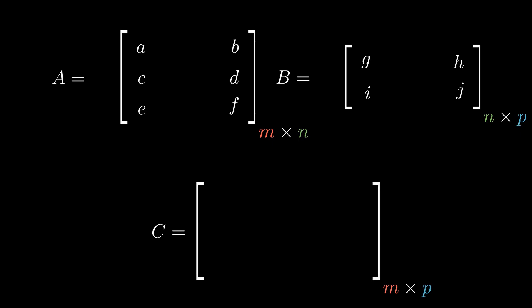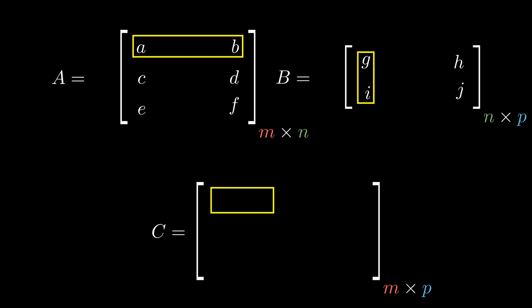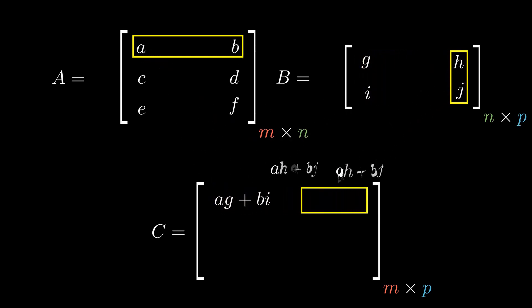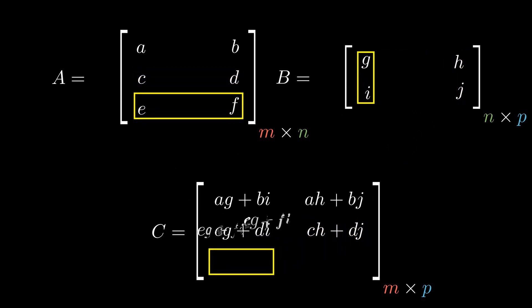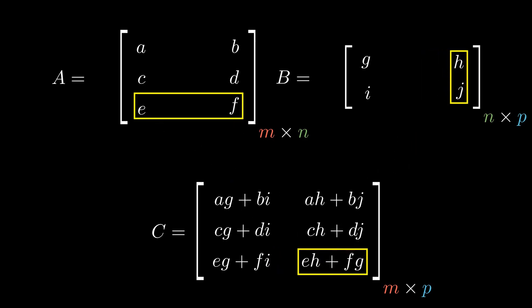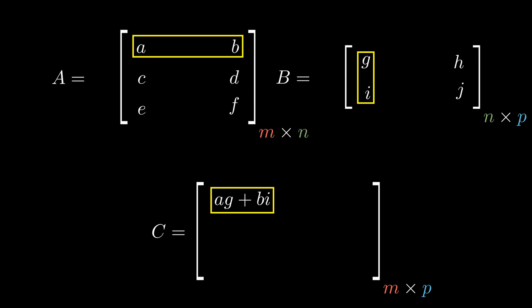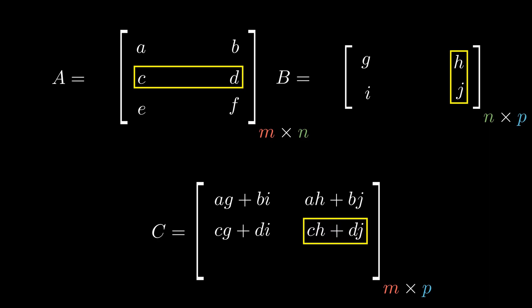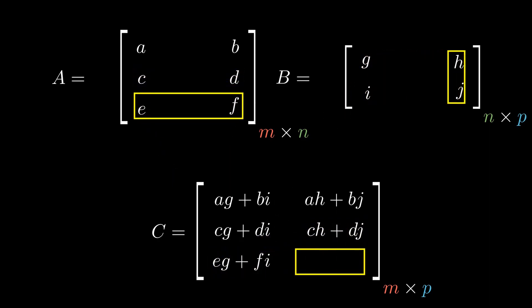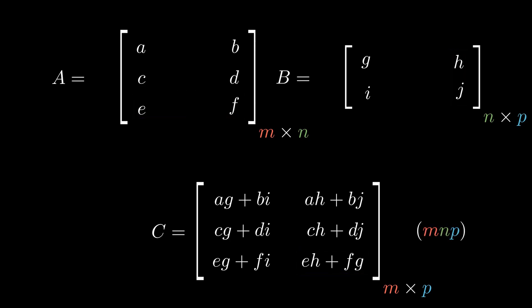The resultant matrix has m×p elements, so the number of multiplications is at least m×p. Each element of the resultant matrix is calculated by taking the corresponding row from the first matrix and the corresponding column from the second matrix — each of dimension n — multiplying the corresponding elements and summing. So we perform n operations per element, giving a total cost of m·n·p multiplications for two matrices of dimension m×n and n×p.